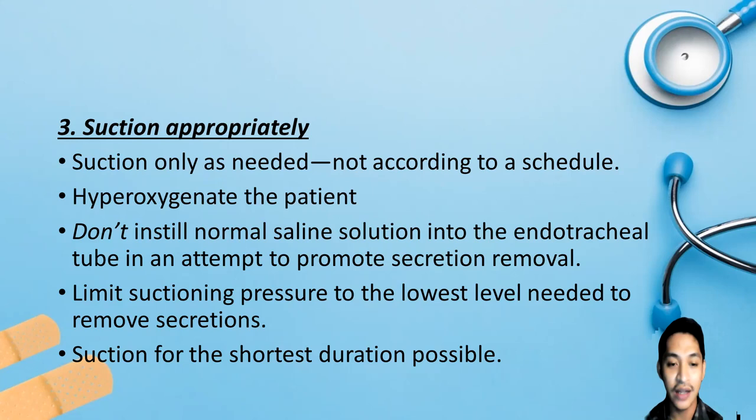If the patient has an ET tube, check for tube slippage into the right main stem bronchus via X-ray as well as accidental extubation. Complications of tracheostomy tubes include tube dislodgment, bleeding, and infection. To identify these complications, assess the tube insertion site, breath sounds, vital signs, and PIP trends on the ventilator. If the patient has a tracheostomy, perform routine cleaning and care according to facility policies and procedures.